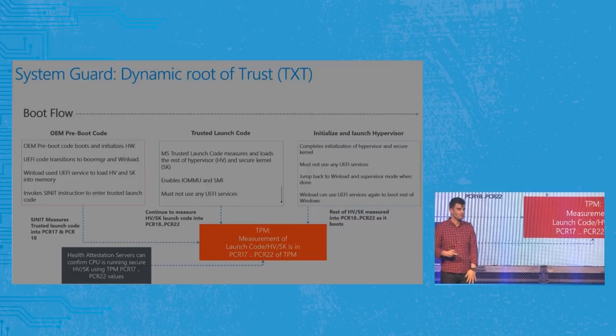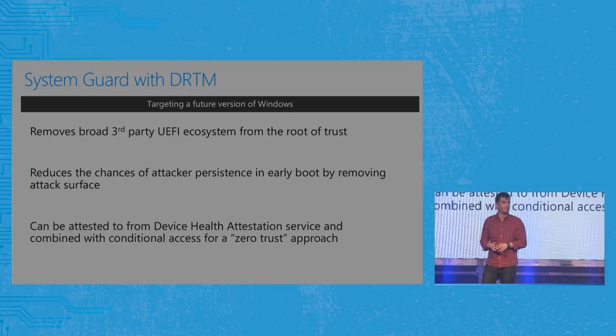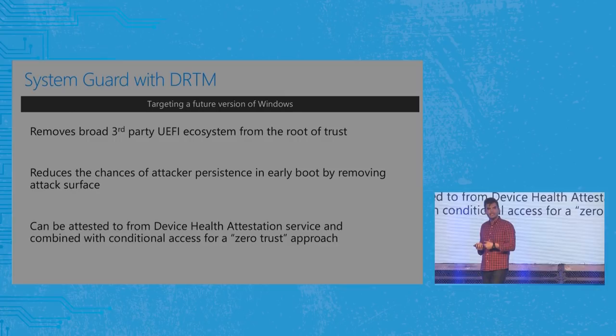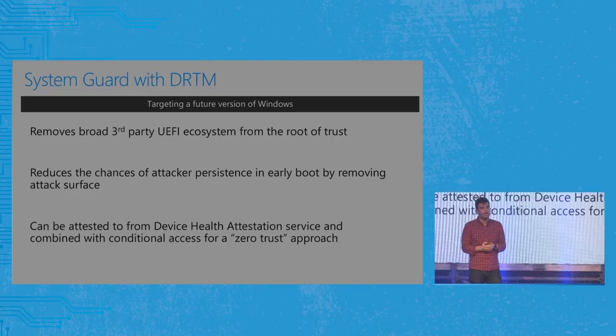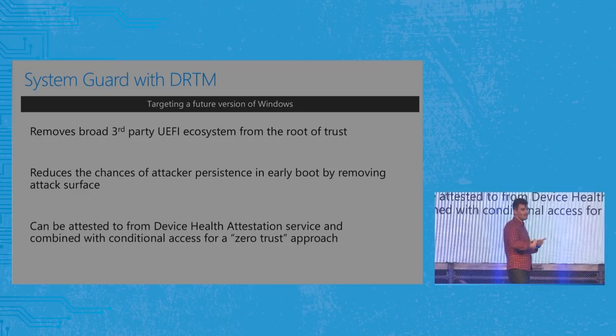We're targeting multiple future versions of Windows here — this takes a lot of firmware and hardware support. A theme you should expect from Microsoft and Windows going forward is these incremental components. We've moved to Windows as a service with two updates per year, which means we can't do a complicated three-year feature — we have to break it apart. If you look at some of the code today, part of the scaffolding is there, and this is something we think we can roll out over time and make very powerful.